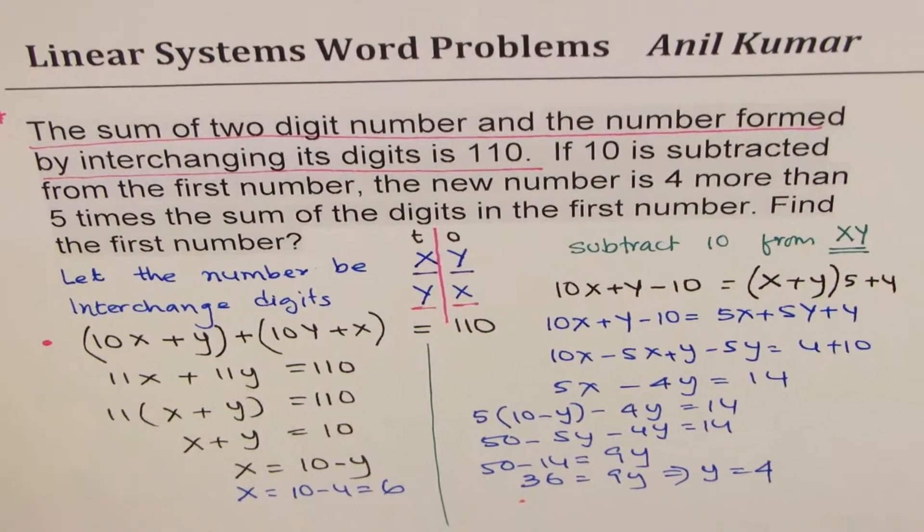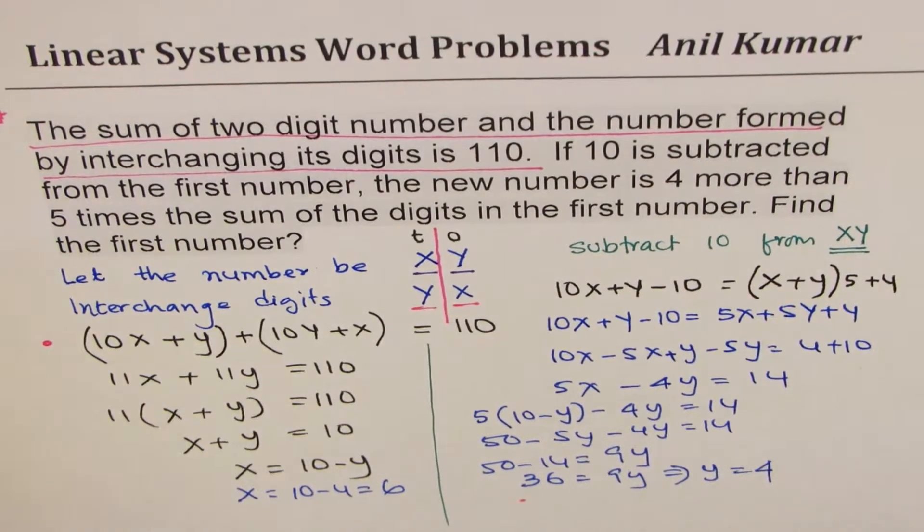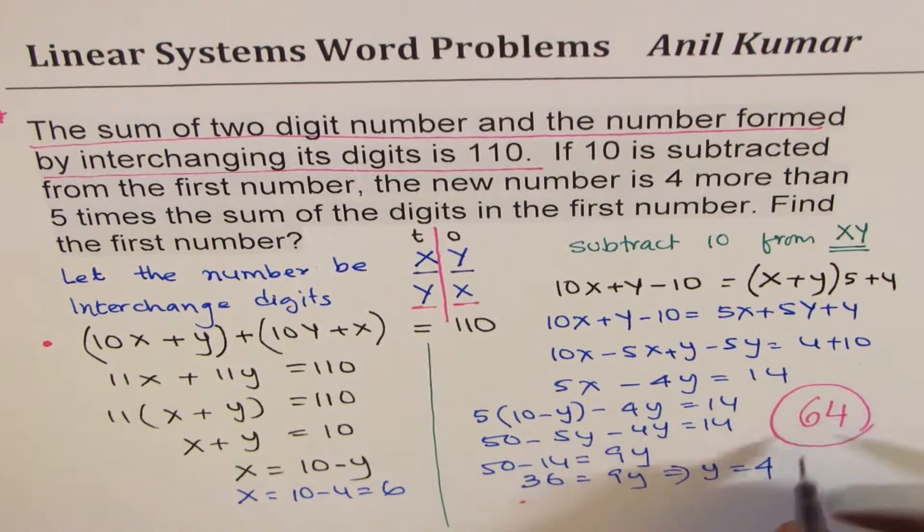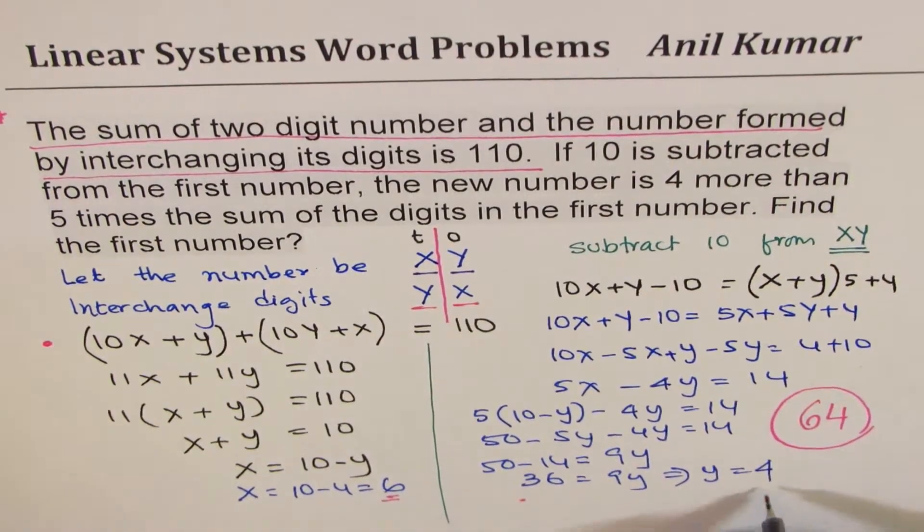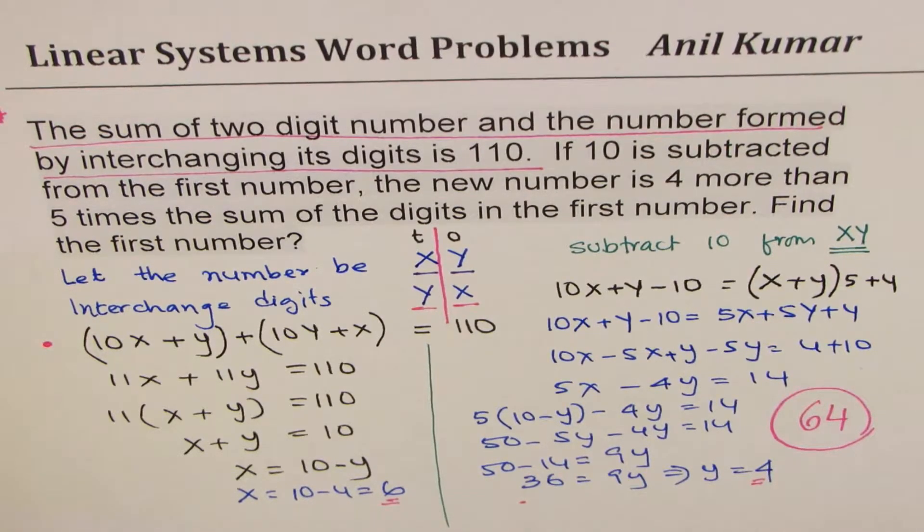So clearly, first number is 64. So the first number is 64, where x is 6, y is 4.